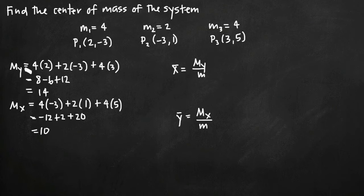So essentially, to find m_y, we're multiplying each mass by the x value in the coordinate point. So we have 4 times 2 plus 2 times negative 3 plus 4 times 3. We're taking the sum of those and when we simplify, we get 14. So that's a moment m_y of 14.